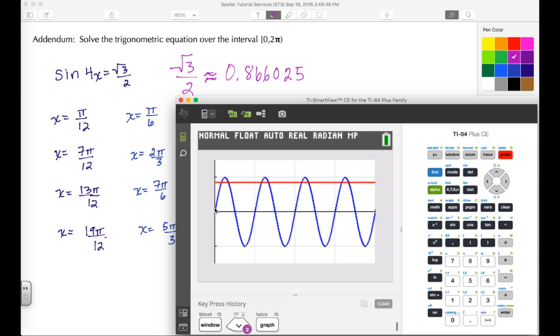What we're going to do is trace along the blue curve at these particular solutions, and we should get y values that match up with √3/2, which is this decimal equivalent. We do that by pressing the trace button, then putting in the first value which was π/12. We see that we are on the intersection with the matching y value. Next is 7π/12, again at the intersection with the same y value.